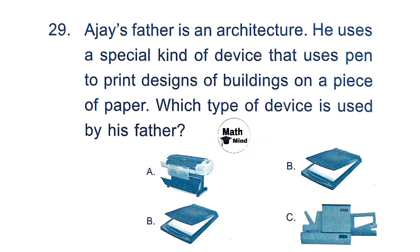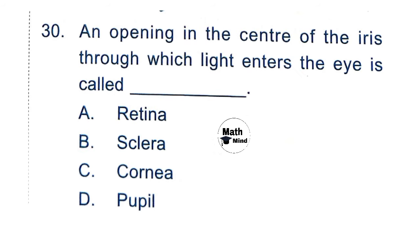Question 29: Howard's father is an architect. He uses a special kind of device that uses a pen to print designs of buildings on paper. Which type of device is used? This is a plotter. Option A is correct. Question 30: An opening in the center of the iris through which light enters the eye is called — this is the pupil. The iris is the colorful part of the eye, and the hole is the pupil.